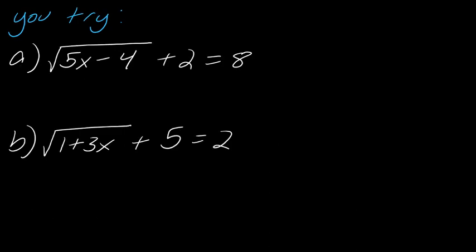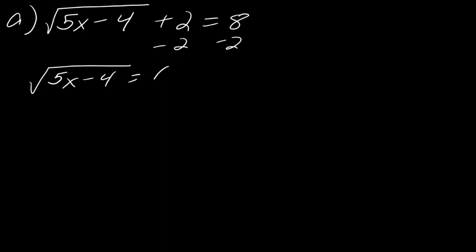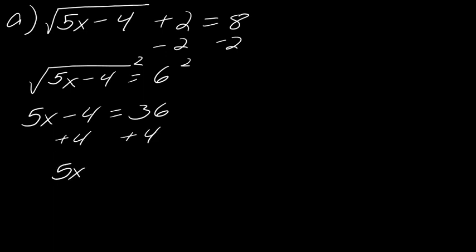Now I want you to try these. Remember, you have to actually isolate the radical first. Hopefully you notice the first thing you want to do is subtract off these numbers before doing anything else. Hit play when you're ready. For part a, we subtract off the 2, giving us the square root of 5x minus 4 equals 6. Now I can square both sides to get 5x minus 4 equals 36. Solving as usual, 5x equals 40, and dividing by 5 gives x equals 8.